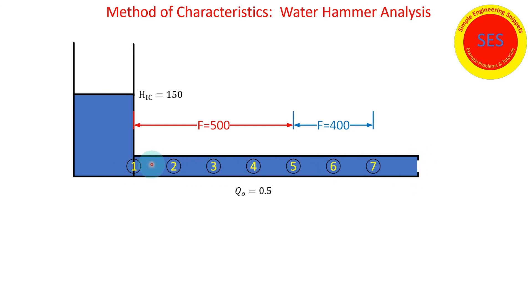You specify zero resistance or friction for all of the pipes you nodalize, and you set the resistance at the end of the pipe to obtain the desired flow. So the initial condition is going to be 0.5 flow rate and a head of 150 at each of these nodes.